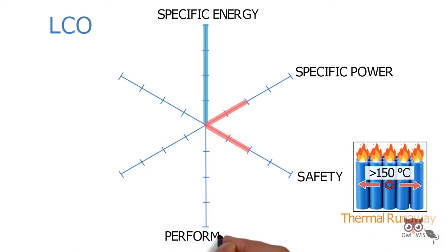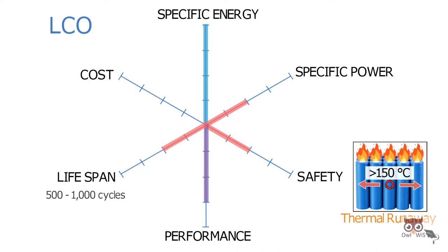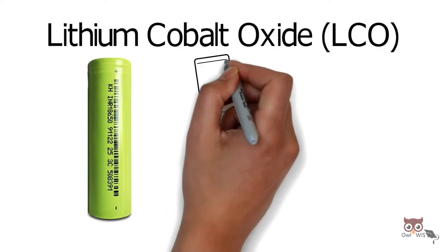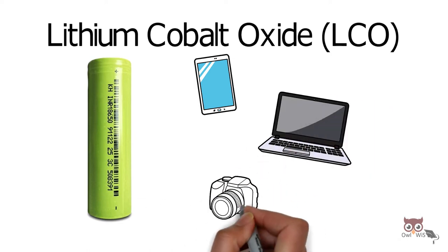In terms of performance, it has optimum performance with a relatively low lifespan of about 500 to 1000 cycles. Since cobalt is costly, it has an optimum cost. LCO is used in mobile phones, laptops, and cameras.